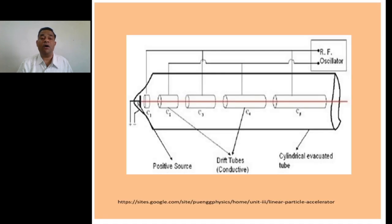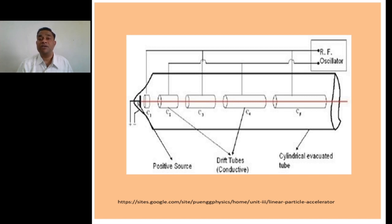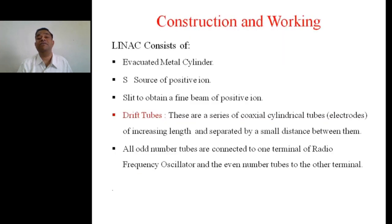All the odd-numbered tubes — 1, 3, 5, etc. — are connected to one terminal of the radio frequency AC voltage source, and the even-numbered tubes are connected to the other terminal of the RF oscillator. During one half of the AC signal, if the odd-numbered tubes are positive, then the adjacent even-numbered tubes will be negative. During the other half of the AC signal, the polarity of the electrodes will be reversed.